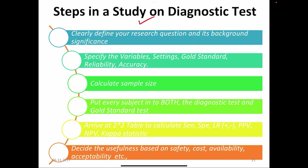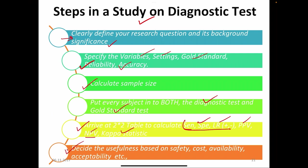What are the steps in a study on a diagnostic test? Clearly define the research question and its background significance; specify the variable of interest — categorical or continuous; then the settings; then the gold standard being compared; then reliability or repeatability; then accuracy or validity given by sensitivity, specificity, predictive values, and likelihood ratio. Calculate the sample size, make every subject undergo both the diagnostic test and the gold standard test, arrive at the 2x2 table, calculate accuracy parameters such as sensitivity, specificity, likelihood ratios, predictive values, and Kappa statistic for reliability. Finally, decide on the usefulness of the test based on safety, cost, availability, acceptability, and economicity.